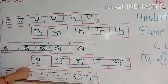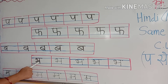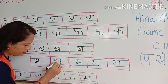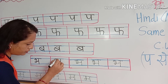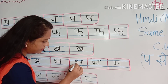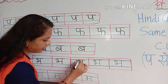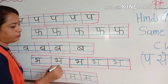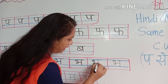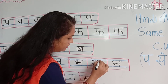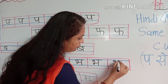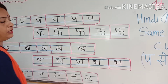Now next, kya hai ye? Bha se — bhaloo. Bha se kya hoga? Bha se bhaloo. Bha. Bha se bhaloo. Kids, you have to write down with me in your workbook. Take your Hindi workbook and write down with me. Bha se bhaloo. Bha se bhaloo.